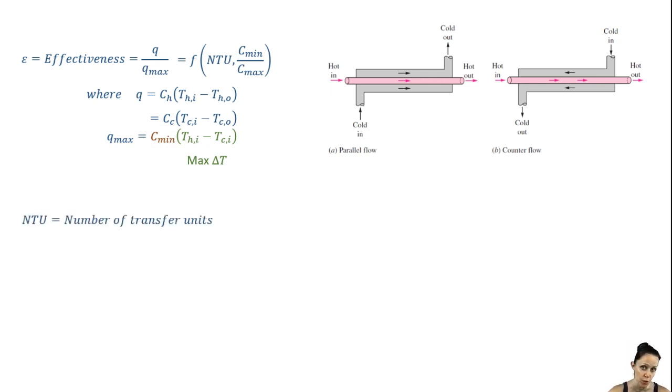NTU stands for the number of transfer units and it's a dimensionless parameter. It's defined by the overall heat transfer coefficient times the area available for heat transfer over the minimum heat capacity rate.